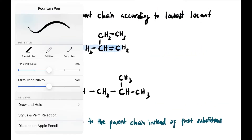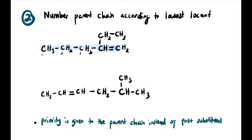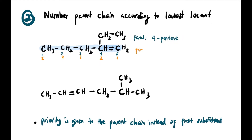Step yang kedua adalah kita number the parent chain according to the lowest locant. Kalau kita kira dari satu hujung: 1, 2, 3, 4, 5. Ataupun dari hujung lain: 1, 2, 3, 4, 5. Kita tengok di mana kedudukan double bond. Kalau warna biru, dia berada di carbon yang ke-4, so nama dia adalah 4-pentene. Kalau warna orange, kedudukan double bond adalah di 1 dan 2, jadi kita boleh panggil dia 1-pentene. Kita akan prefer yang lower locant which is 1-pentene.